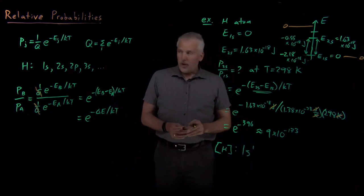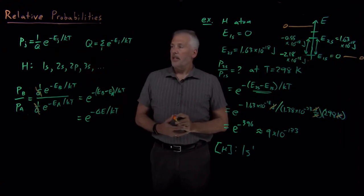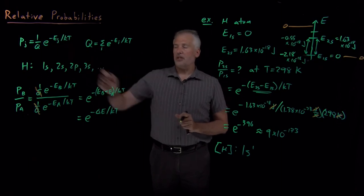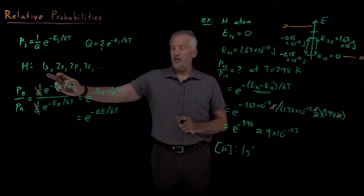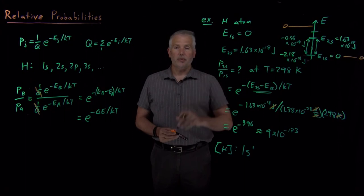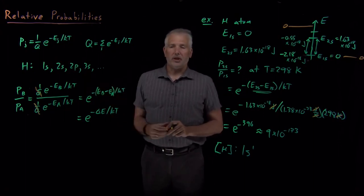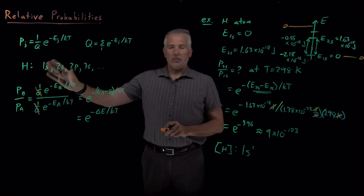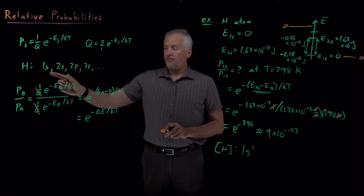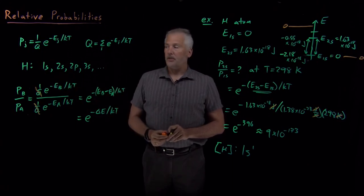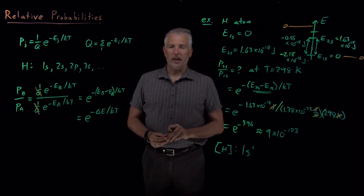So now we know how to calculate probabilities given the energies. The next question is: where do those energies come from? If I give you the energies, you can calculate the probabilities or relative probabilities. But we'd also like to predict the energies themselves — we can either measure them in the lab or predict them with physical chemistry. To do that, we'll need to use quantum mechanics. So that's what we'll start next: learning a bit about quantum mechanics.